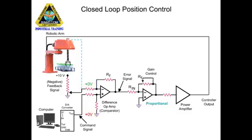For example, with the arm at the bottle-pick position, the potentiometer output voltage of zero matches the command signal of zero from the computer. To change the arm to another position, a command signal from the computer is required.